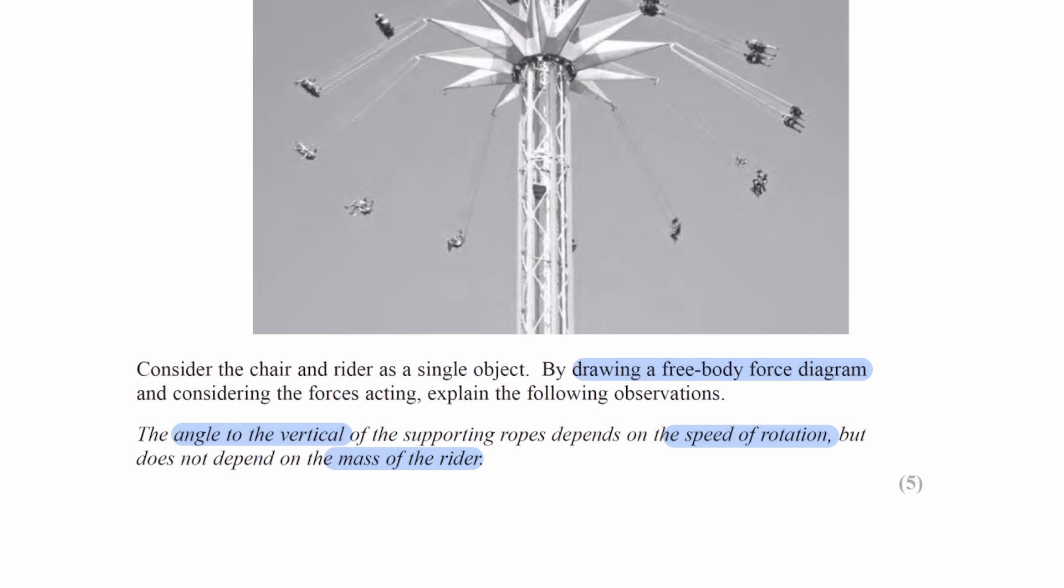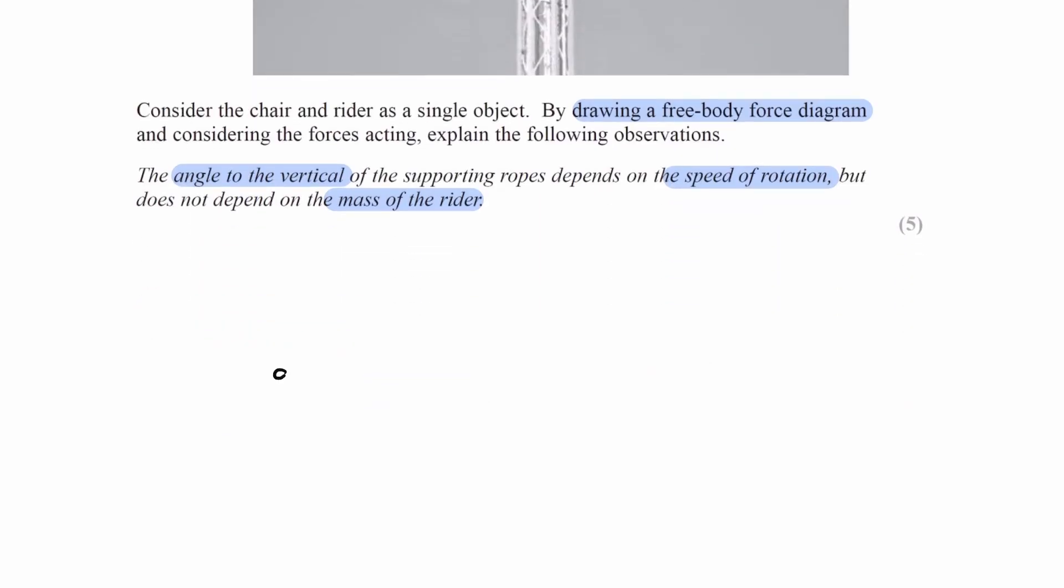All right, so let's start with our diagram. Here is our chair and rider. There is a tension force going towards the top right, that's T, and there is a weight force going downwards, let's call that mg.